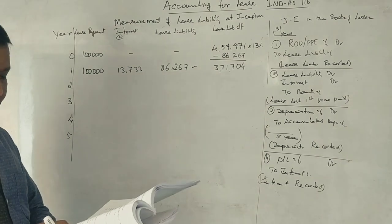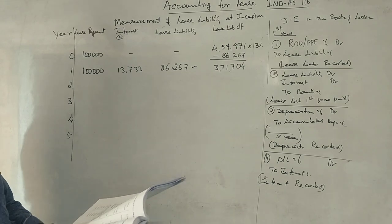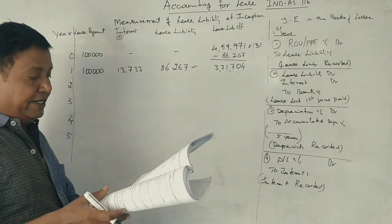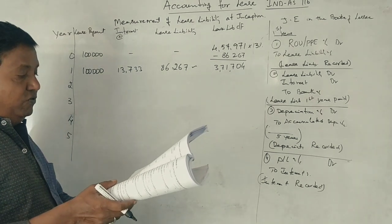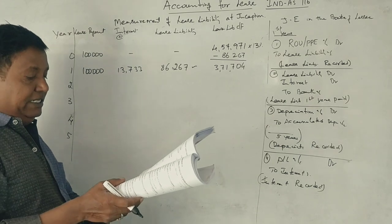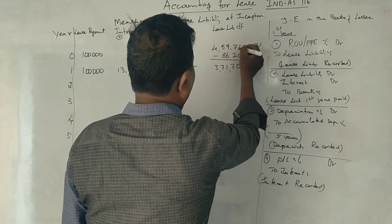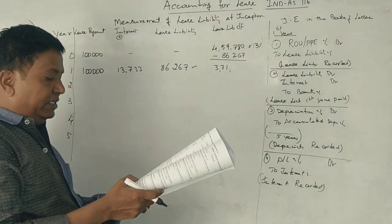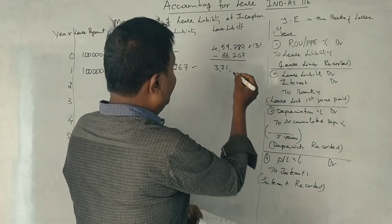3,71,704 Rs. 4,57,780 minus 86,267 equals 3,71,513 Rs.